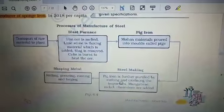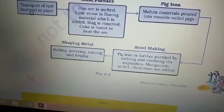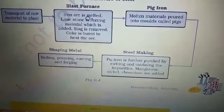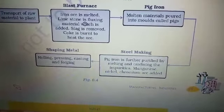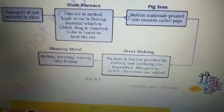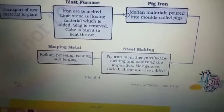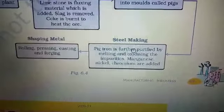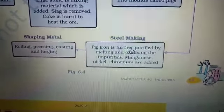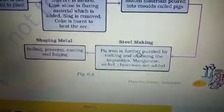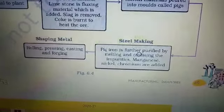The process of manufacturing steel begins with the transport of raw materials to the plant. Next, iron is melted using limestone and coking coal. The molten material is poured into molds called pigs — that is why the product is called pig iron. The pig iron is then further purified by melting and oxidizing the impurities. To the pure pig iron, manganese, nickel, and chromium are added to make steel.